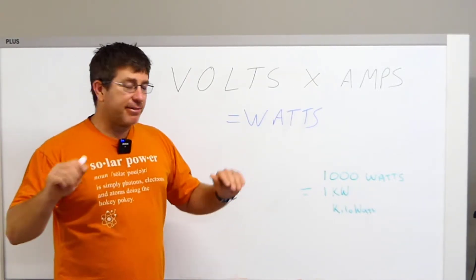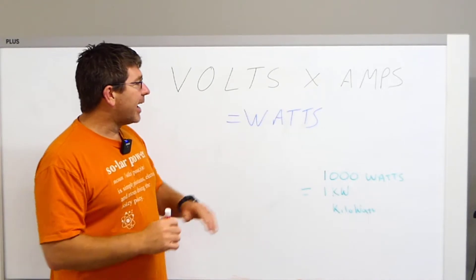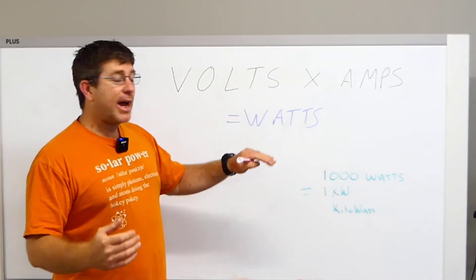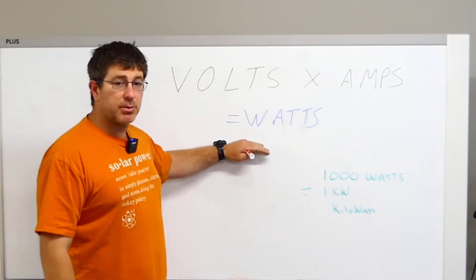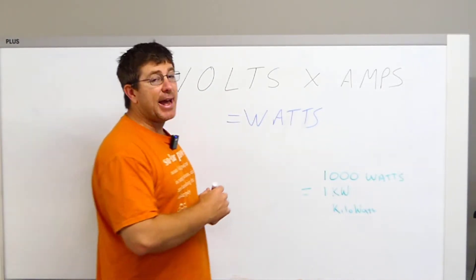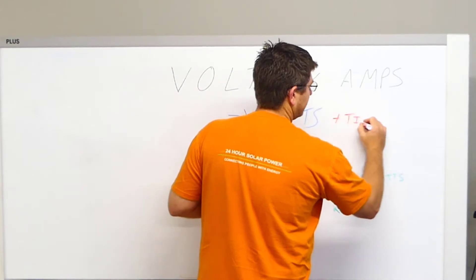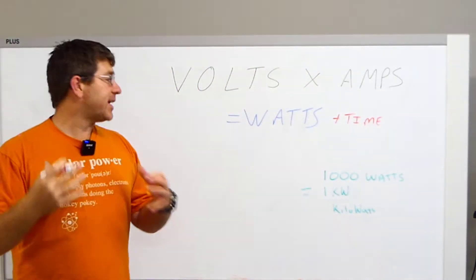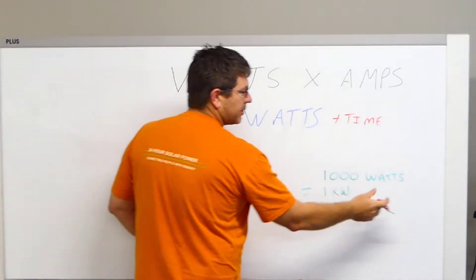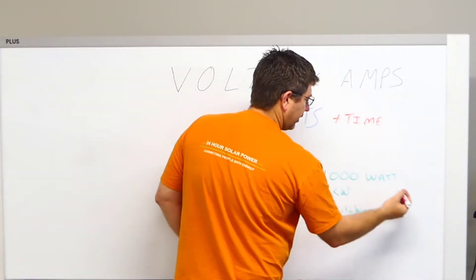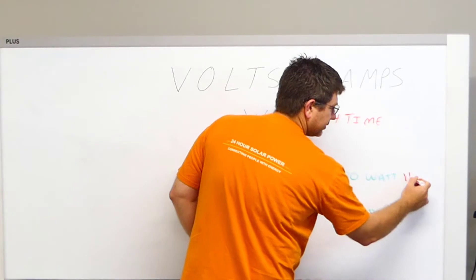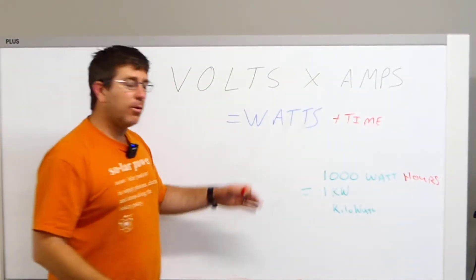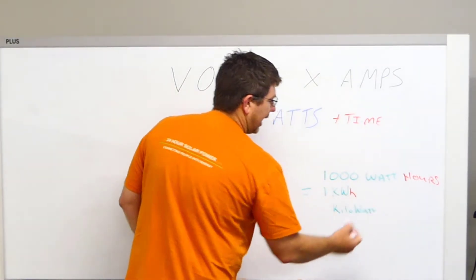They're two completely different things. To get the watt hour, we've got volts times amps equals watts, then we add time. That time gives us the watt hour. So one thousand watts becomes one thousand watt hours, and one kilowatt becomes one kilowatt hour.